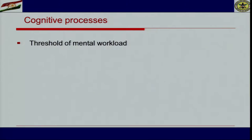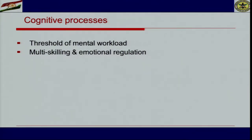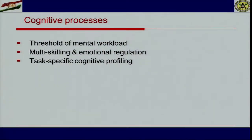For understanding cognitive processes, we can develop experimental paradigms in a non-traditional manner to understand the threshold of mental workload. Can we develop multi-skilling and emotional regulation together? If a person is capable of multi-skilling, generally emotional regulation becomes poor, and if there is higher emotional regulation, multi-skilling is not possible — the inverse relationship between cognitive and affective variables. Task-specific cognitive profiling is a very important area. We also need cognitive restructuring in extreme environments — whether high altitude, undersea, desert, or jungle — where our cognitive system develops turbulence.